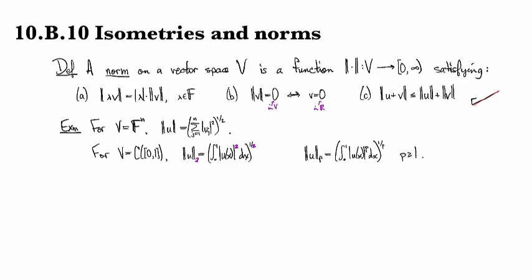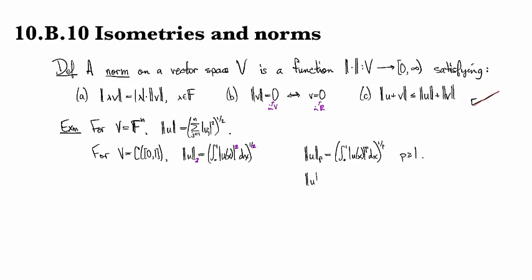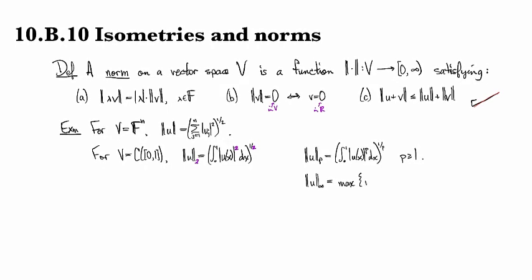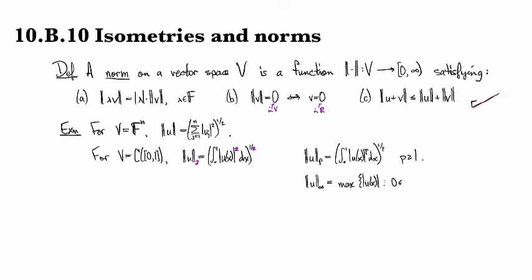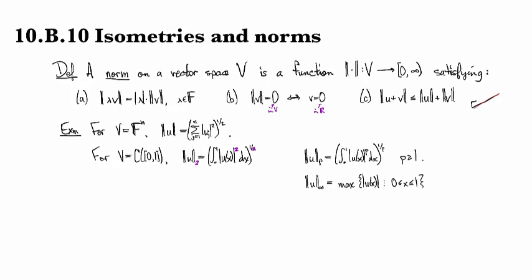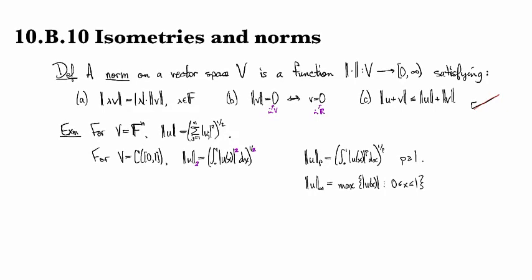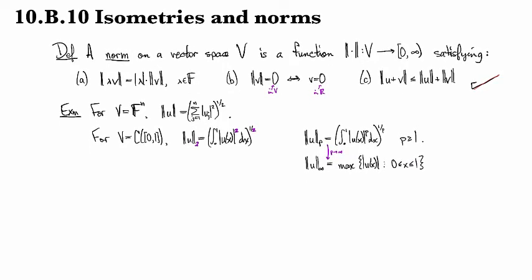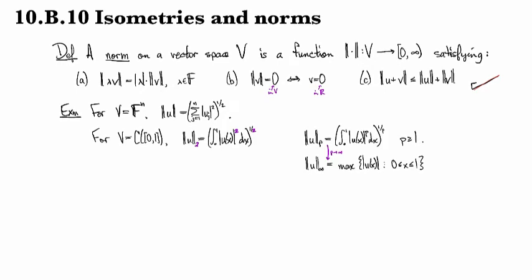Another thing that you might do is you could also take the infinity norm, which is the max value of u on the domain of the function that you're interested in. You can actually prove that if you take the limit as p goes to infinity you get this one, so that's why it's called the infinity norm.